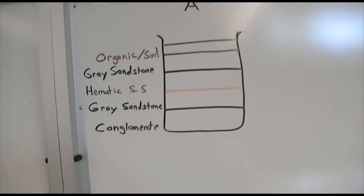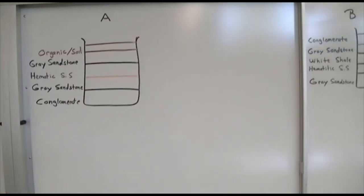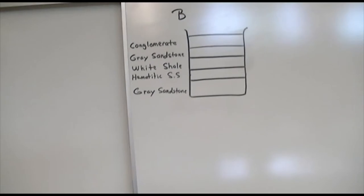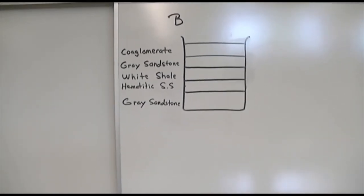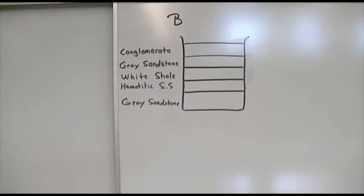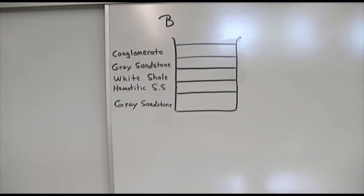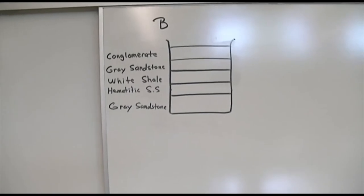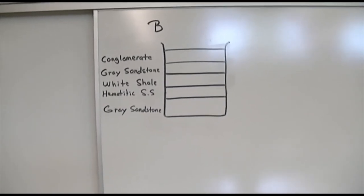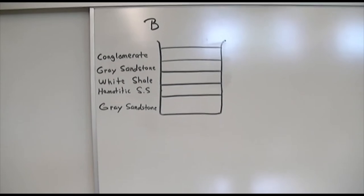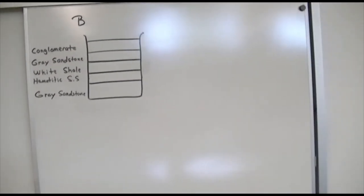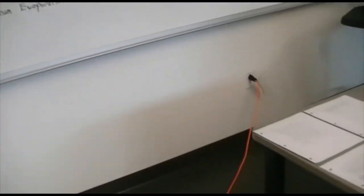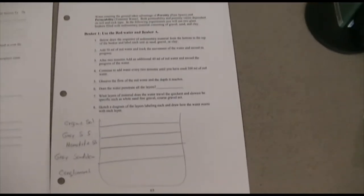For beaker B, the geology is a little different. At the very top we have a conglomerate, then a gray sandstone, then a white shell, then a hematitic sandstone, and a gray sandstone at the bottom. Record those units on your lab sheet for beakers A and B.